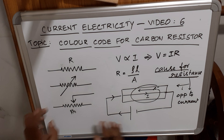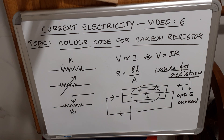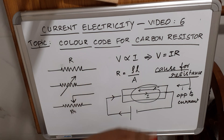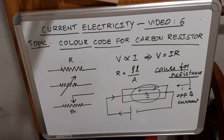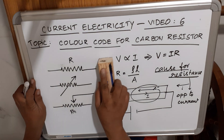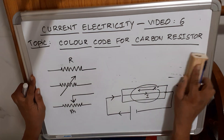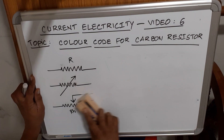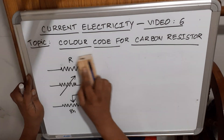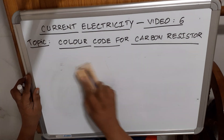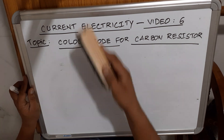This is a brief introduction of resistance. Now we will discuss color code for carbon resistors, which is used in engineering. A color code has been given for carbon resistors.